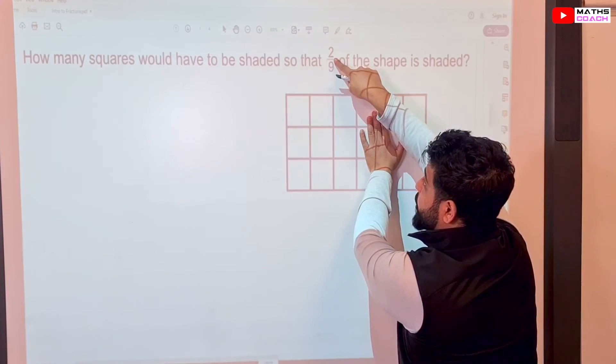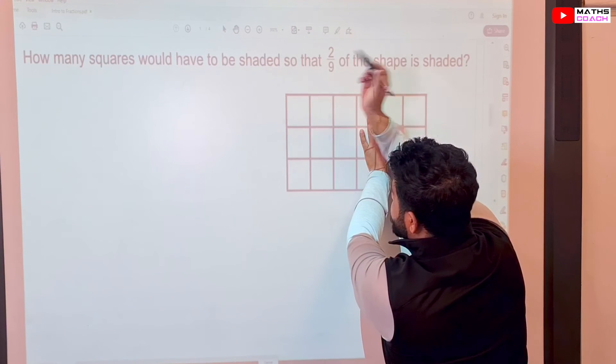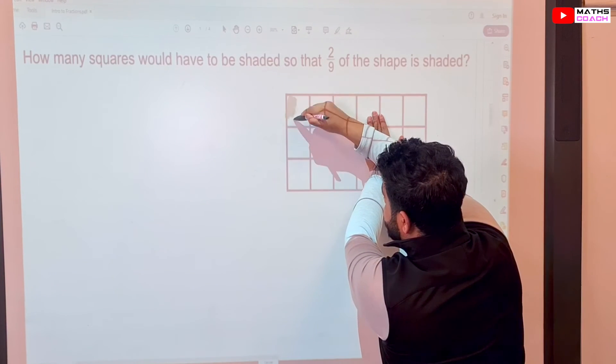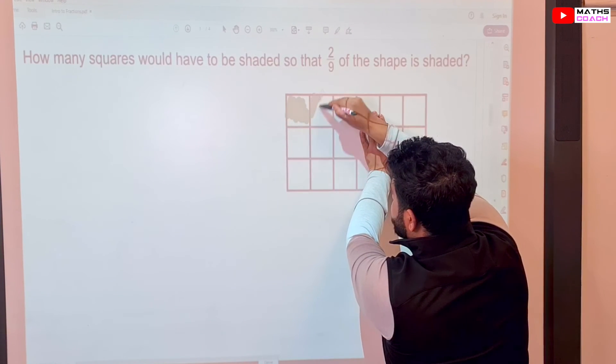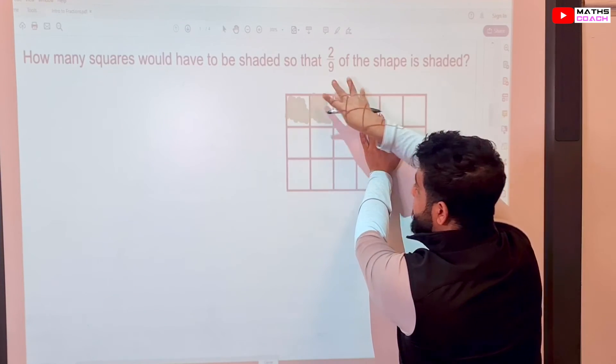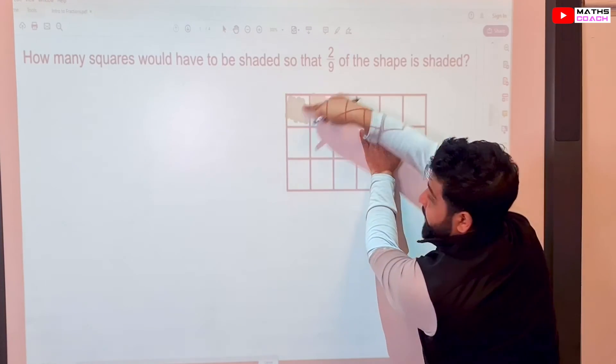That's our first nine squares. And we want to shade two of those. So let's just pick any two. It doesn't matter which two you pick. I'm going to pick this one here and I will pick this one here as well. So that's two out of nine. That's sorted.